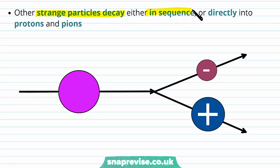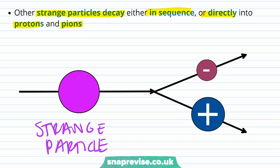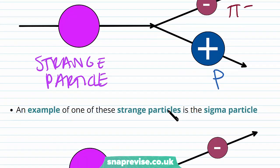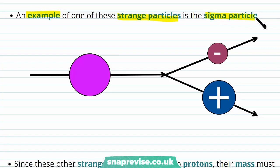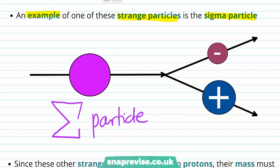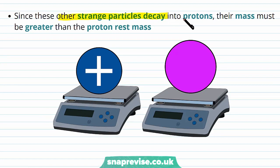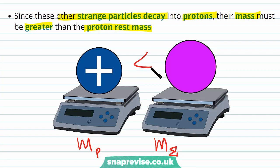Other strange particles decay either in sequence or directly into protons and pions. For example, the sigma particle is a strange particle that decays into a negative pion and a proton — it cannot decay into pions alone. Since these other strange particles decay into protons, their rest mass must be greater than the proton rest mass, which is indeed the case for the sigma particle.